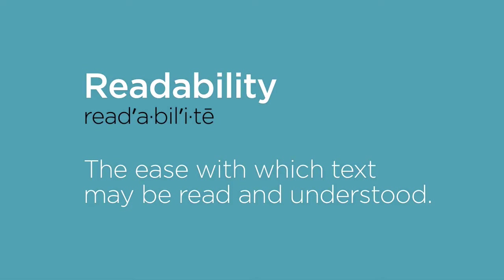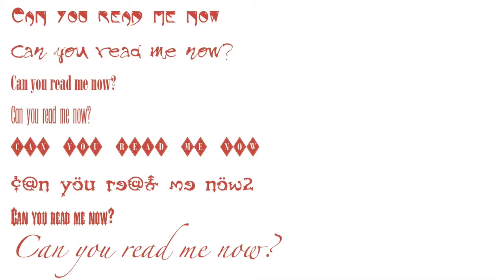Let's look at some examples of difficult legibility. How many of these can you easily, instantly understand are in fact characters that can be read? Now squint. How many can you instantly understand are readable Latin-based characters with your eyes squinted? Stand up and take a step back — say six or ten feet. Now answer the same question.